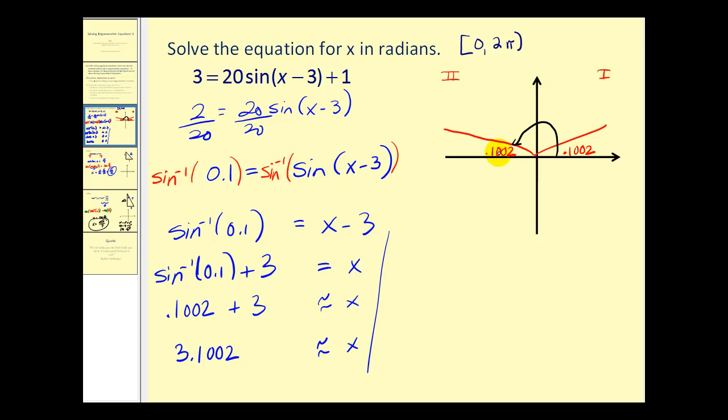So a reference angle of 0.1002 radians in the second quadrant would return the same sine function value. So another angle that would produce the same function value would be π minus 0.1002, and this would be 3.0414.